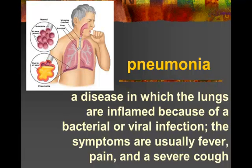Pneumonia — which I had this year as well — is a disease in which the lungs are inflamed because of a bacterial or viral infection. When that infection, like a cold, moves from your mouth and throat down into your bronchi, that's bronchitis. And if you still don't get rid of it, it can go into your bronchioles and into your lung tissue — that's pneumonia. Symptoms are usually fever, pain, and a severe cough.